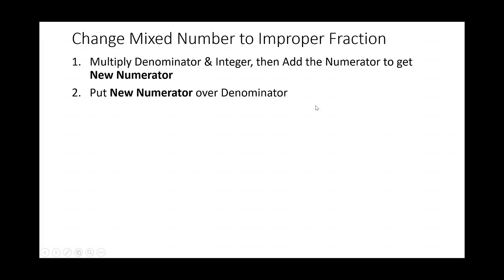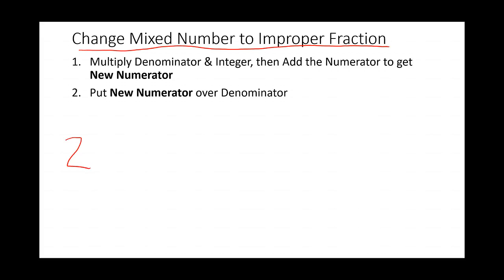Now we want to move on to our next topic and talk about how to change a mixed number to an improper fraction. Step 1: multiply the denominator and integer. Step 2: add the numerator to get the new numerator. Step 3: put the new numerator over the denominator. We're going to take our same example, 2 and 2 thirds. Multiply the denominator and integer — draw a little arrow and a multiplication symbol.